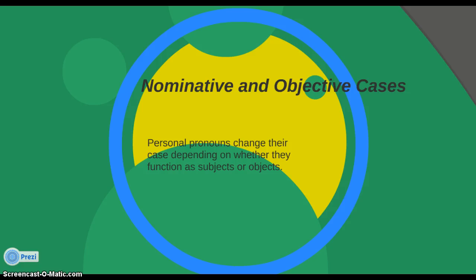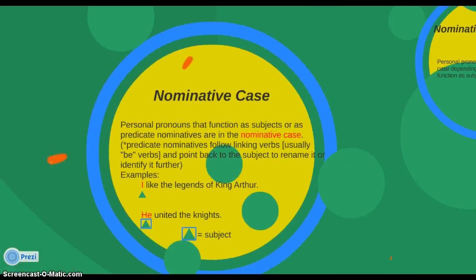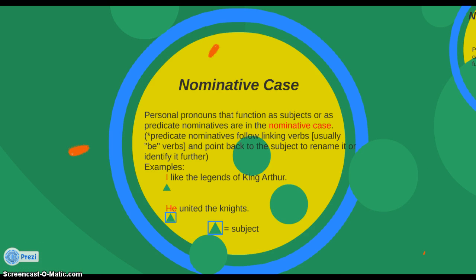Personal pronouns change their case depending on whether they function as subjects or objects — that's what we're going to be looking at today. Let's start with nominative. Personal pronouns that function as subjects or as predicate nominatives are in the nominative case.